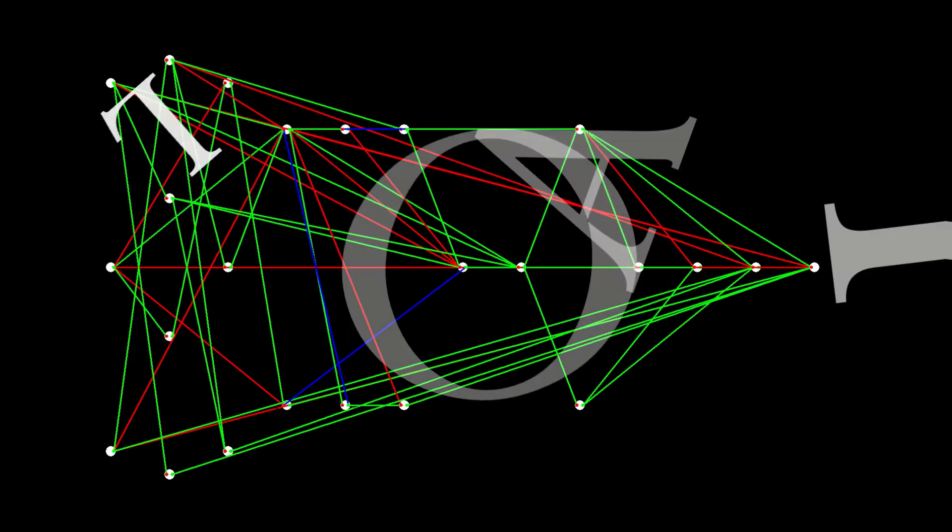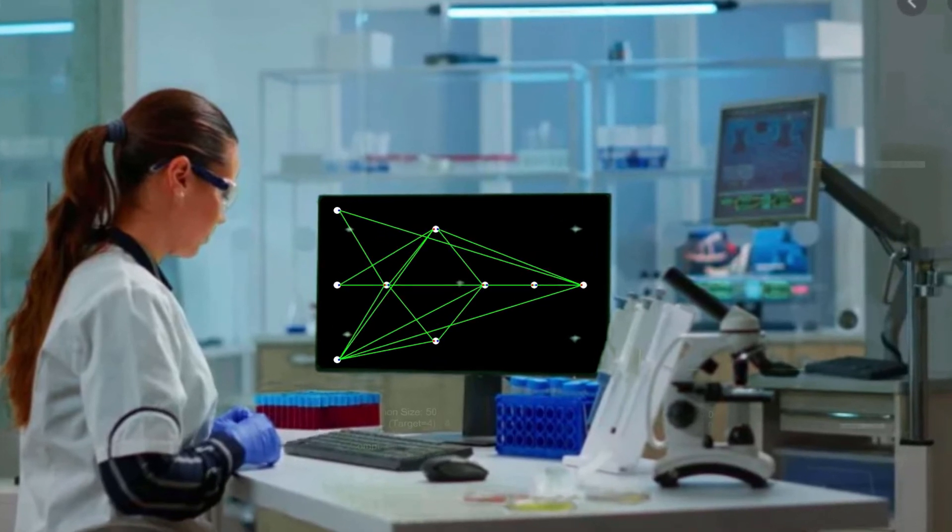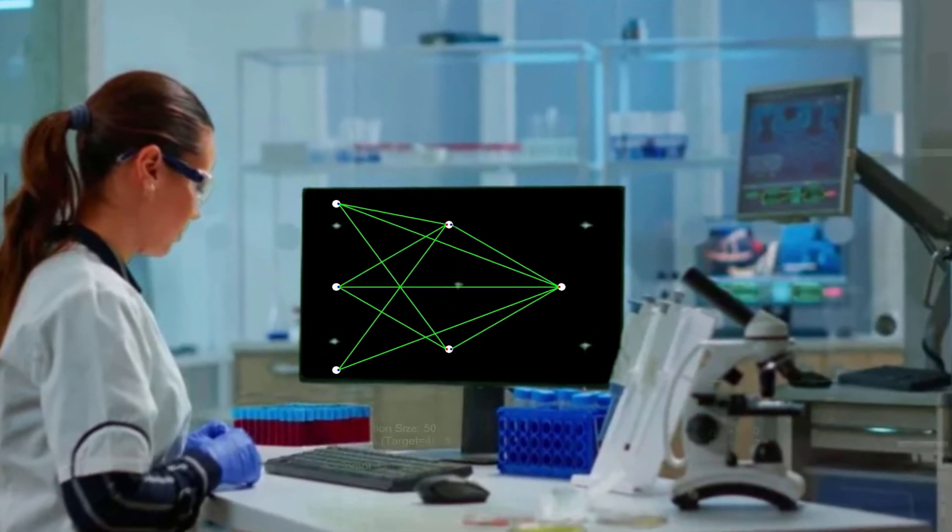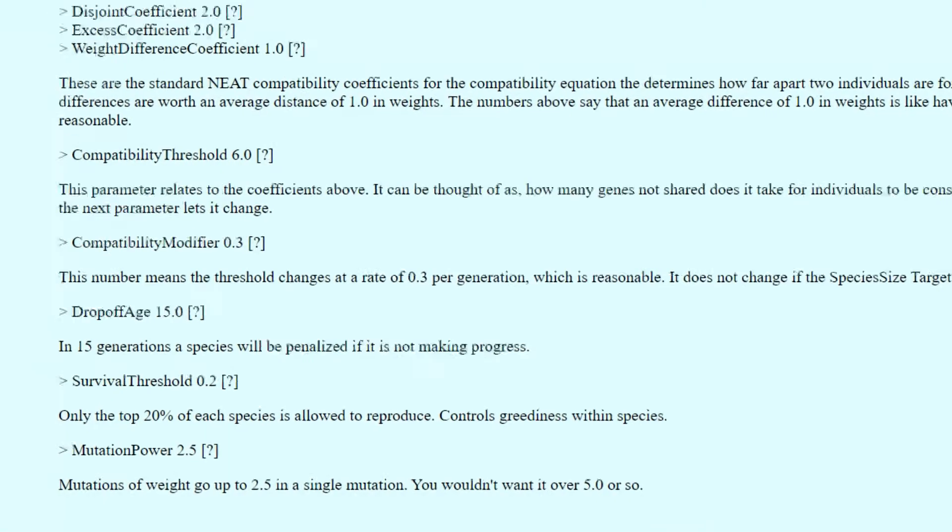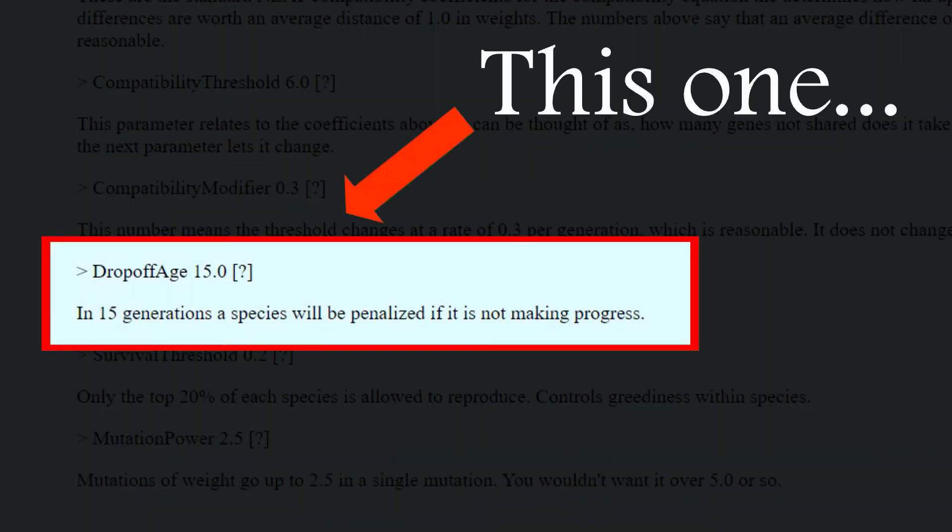NEAT avoids this by building up structures slowly, piece by piece, with each piece being tested carefully. So I implemented a function to penalize species that weren't improving. If its fitness didn't improve in 15 generations, I reinitialized all species members.